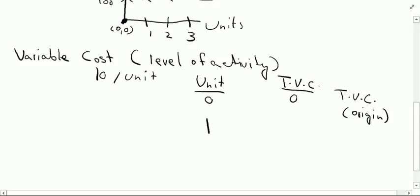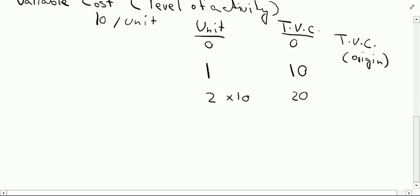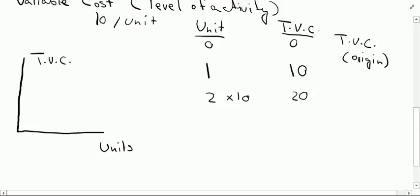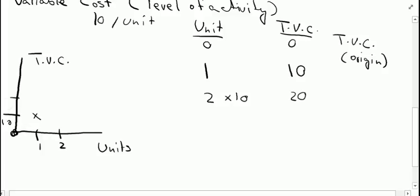If I produce 1 unit and the variable cost per unit is 10 rupees, I will have to bear an expense of 10 rupees. For 2 units I will have to pay 20 rupees. Therefore the total variable cost graph will be an upward sloping graph — starting from the origin, moving upwards as units increase. For 3 units I will have to pay 30 rupees of total variable cost.